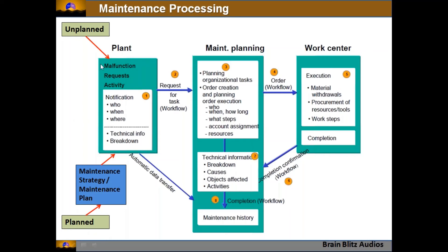For planned maintenance, the process is similar but notifications are created at regular intervals based on the maintenance strategy. In the AMC case, a planned agreement exists and based on the strategy — whether a three-month cycle, single cycle, or counter-based like vehicle mileage — when the counter reaches a threshold, a notification is triggered. It then follows the same path: maintenance planning, execution, completion confirmation, technical information update, and maintenance history stored in information systems.